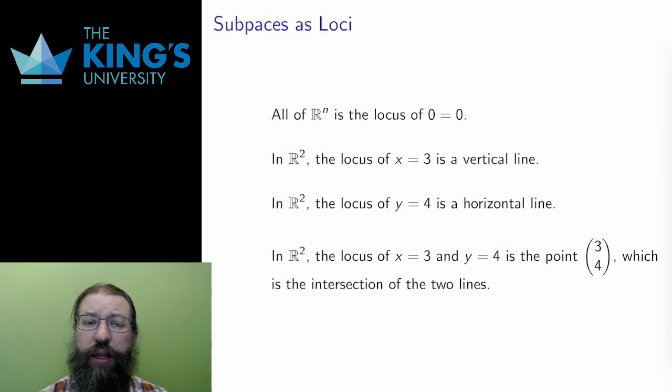So, what does this mean? Let me run through some of the first important examples. All of Euclidean space Rn is the locus of 0 equals 0, which is the linear equation I get when all the constants ai in the linear equation are 0. Since all points satisfy this, all of Rn is the locus.